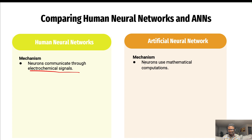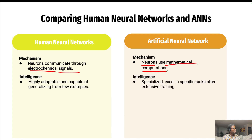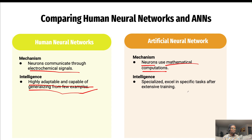For intelligence: humans are highly adaptable and capable of generalizing from few examples. Humans can learn many different things at the same time — cooking, housework, mathematics, English, and so on. But for artificial intelligence, most systems are specialized in specific tasks after extensive training. You see robots that can do only one thing, or applications that do just one thing.